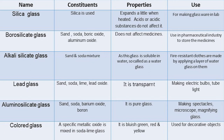Silica glass: silica is used; it expands a little when heated; acids and alkali do not affect it; it is used for making lab glassware. Borosilicate glass: constituents are sand, soda, boric oxide and aluminium oxide; it does not affect medicines; it is used in the pharmaceutical industry to store medicines. Alkali silicate glass: made from a sand and soda mixture.